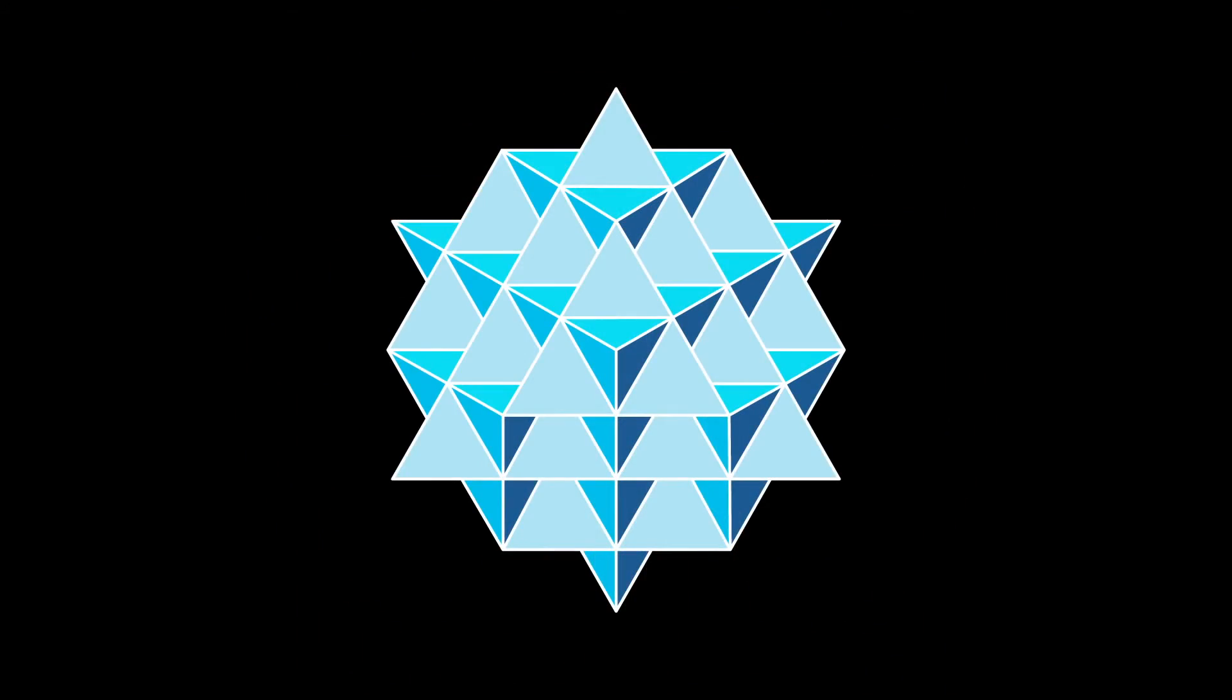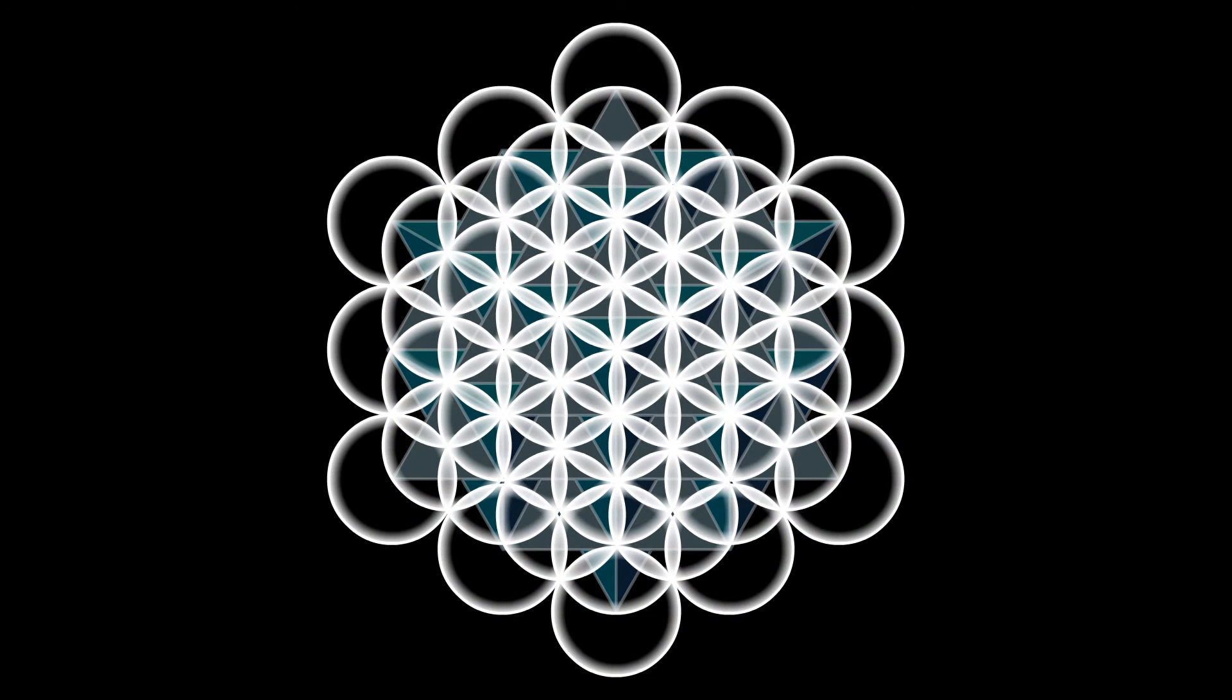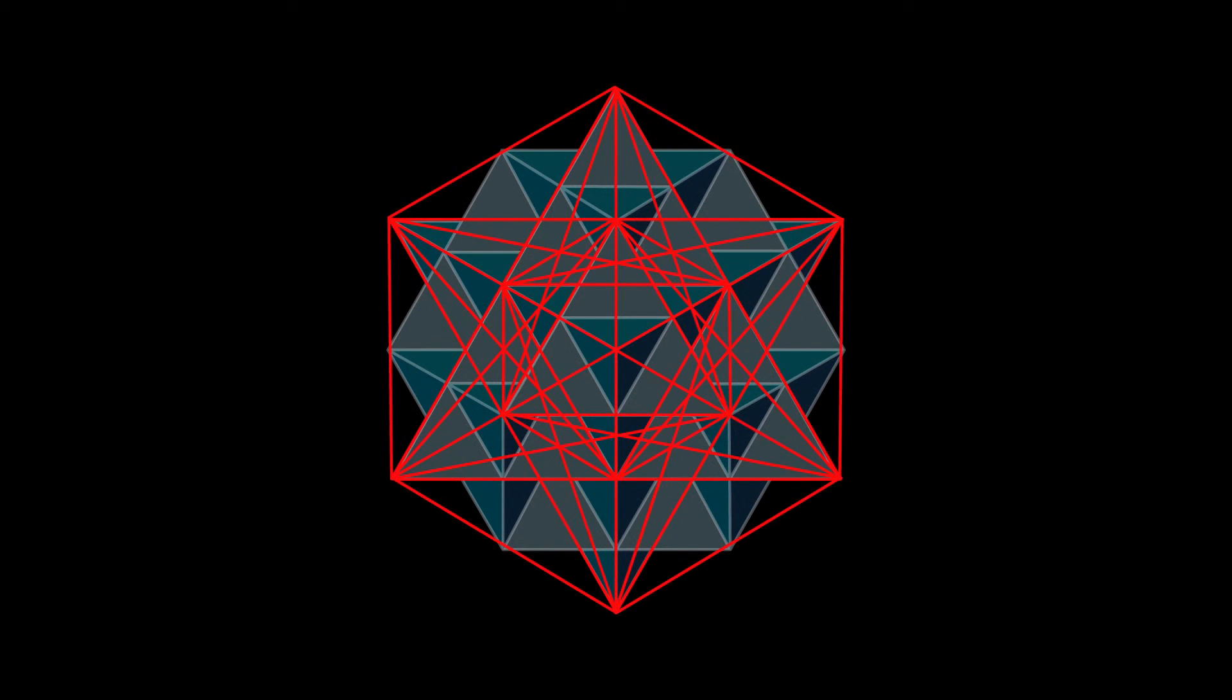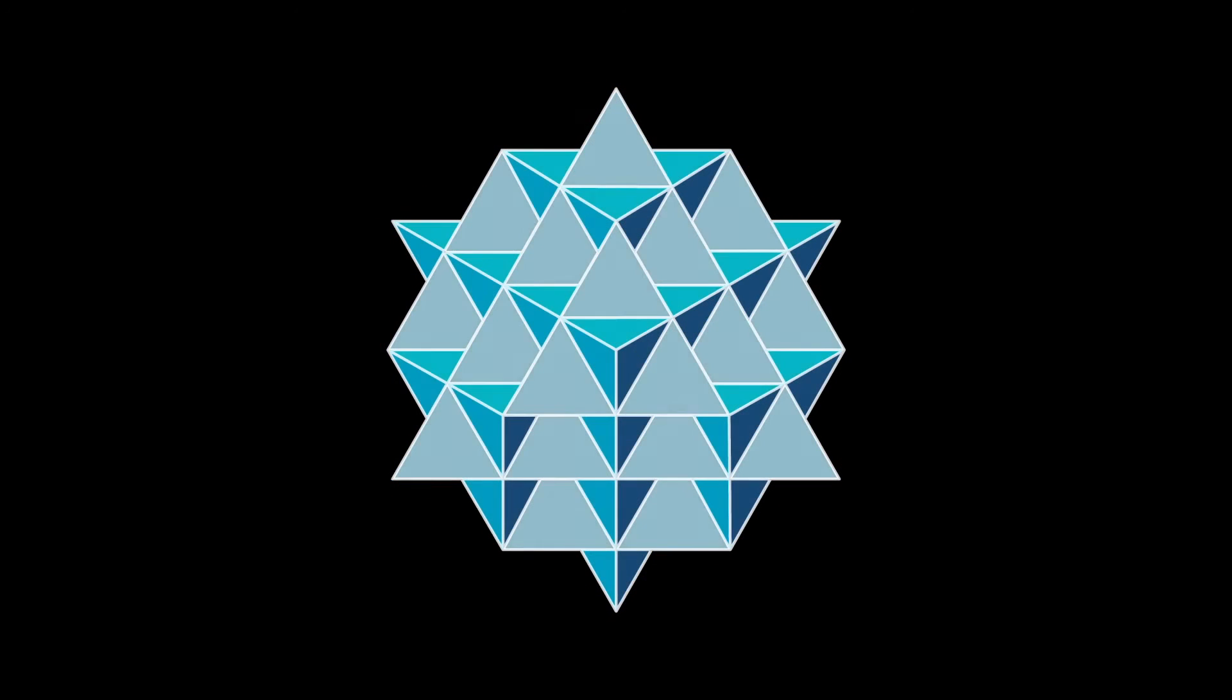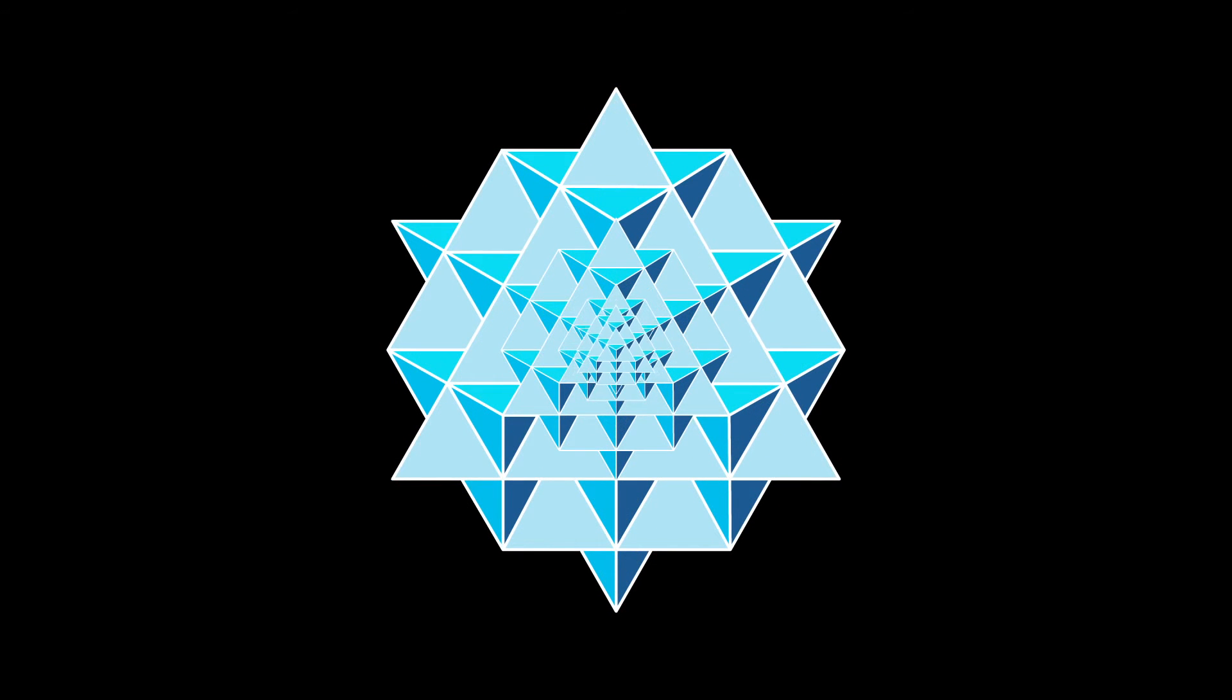This is the pattern we come up with, which Nassim has called the 64 tetrahedron grid. Were you to put a sphere around every point, they would create a perfect three-dimensional flower of life. This is basically a three-dimensional Metatron's cube, a structure by which all known structures can be found.